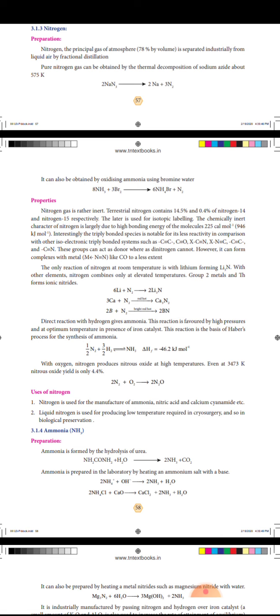With oxygen, nitrogen produces nitrous oxide at high temperature. Even at 3473 Kelvin, the yield is only 4.4%: N2 plus O2 gives 2NO.